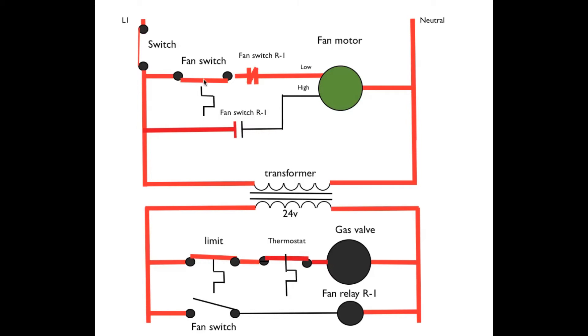Okay, the next thing that's going to happen is the heat operated fan switch is going to close. This fan switch is closed as the heat exchanger warms. Power is going to pass through the normally closed R1 fan switch contacts to energize the fan motor. So at this point, gas valve is energized, warmed up the furnace, fan switch is closed. Power passes through the normally closed set of fan switch contacts and energizes the motor in low speed.